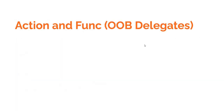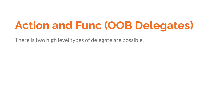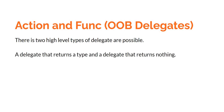The next thing we are going to talk about is Action and Func. The Delegate discussion is not complete if we don't discuss Action and Func. These are the out-of-box Delegates provided by C-Sharp so that we don't have to create our own Delegate almost ever. At a high level there are only two types of Delegate possible: one type returns something and takes parameters, and the other type returns nothing but takes parameters. That's what Action and Func is all about.